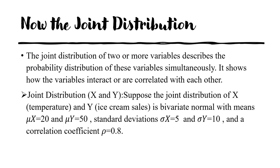Now what is joint distribution? The marginal distributions relate to specific individual variables. The joint distribution is a bit different: the joint distribution of two or more variables describes the probability distribution of those variables simultaneously. A new factor here is simultaneity — we look at both distributions at the same time, and it shows how the variables interact or are correlated with each other.